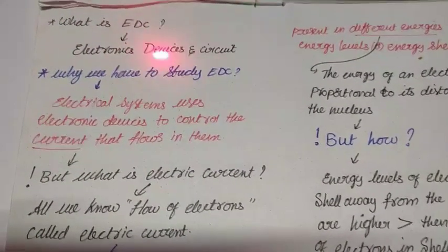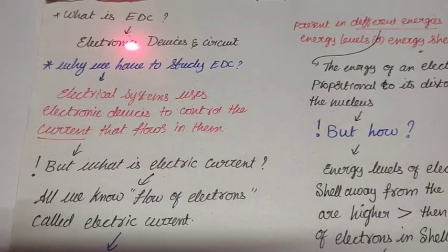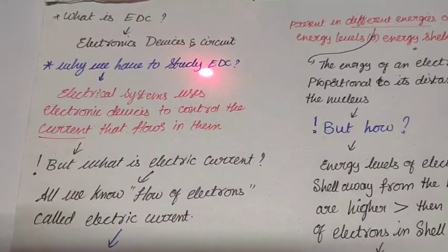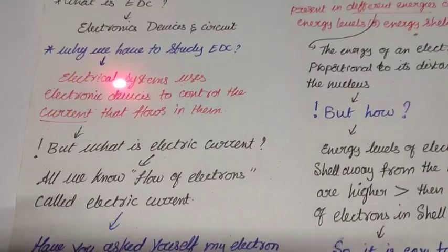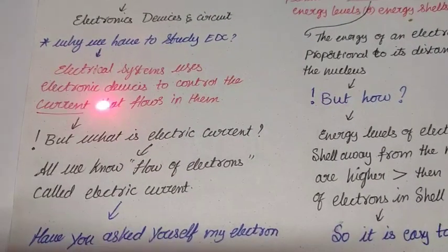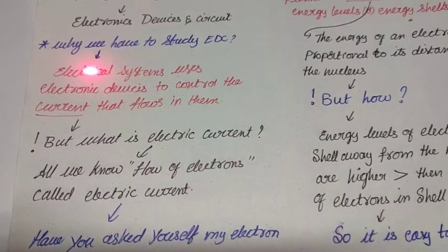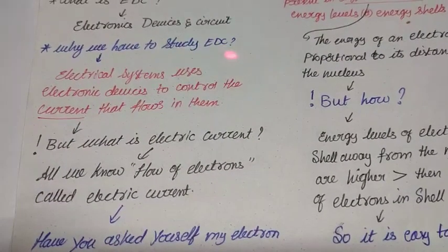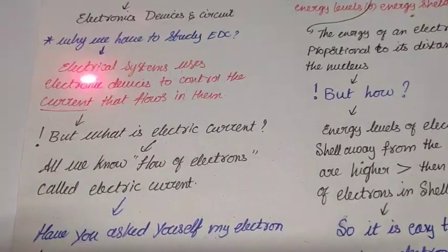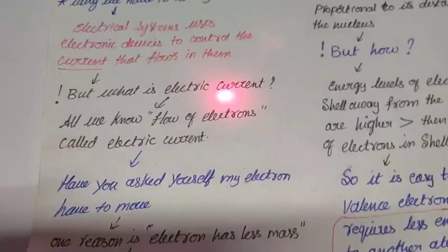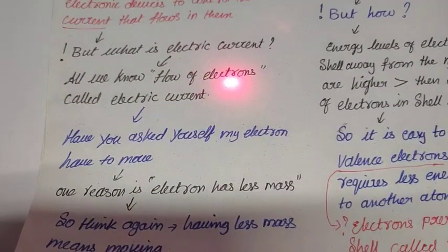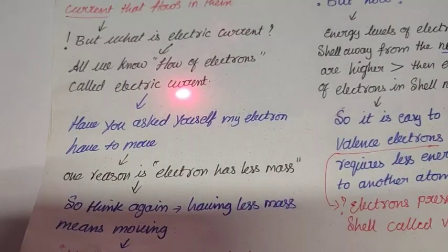So I asked a previous question: what is EDC? Electronic devices and circuit. This means electronic devices and circuit. Why do you have to study EDC? Let's see. Electrical systems use electronic devices to control the current to flow in them. That's why we have to study electronic devices. With electronic devices, current can be controlled in the electrical systems. But what is electric current? Have you known? Yes, we all know flow of electrons is called electric current.